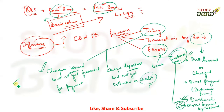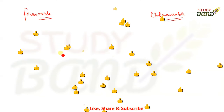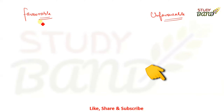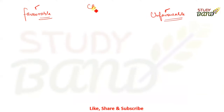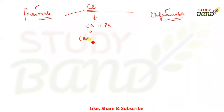Now let's move to the main lecture — the practical question. Before that, I want to explain a very important concept: favorable balance and unfavorable balance. The cash book can have a favorable or unfavorable balance. The main purpose of BRS is to match the cash book balance with the pass book. Remember, in the cash book we only look at the bank column.